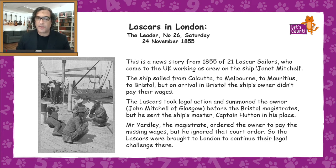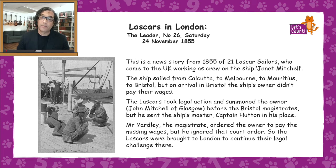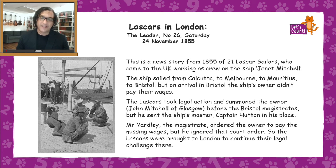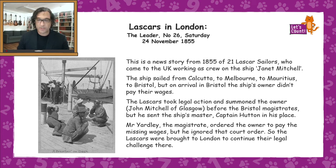Here's a news story from 1855 about 21 Lascars who came to the UK as crew members on a ship called the Janet Mitchell. The ship had sailed from Calcutta to Melbourne in Australia, to Mauritius in Africa, and then to Bristol. But when it arrived in Bristol, the ship's owner didn't pay the Lascar sailors' wages. The Lascars took legal action — they went to court and summoned the owner, John Mitchell of Glasgow, before the Bristol Magistrates Court. The magistrate ordered the wages be paid, but the owner ignored the court order, so the Lascars were brought to London to continue their legal challenge.